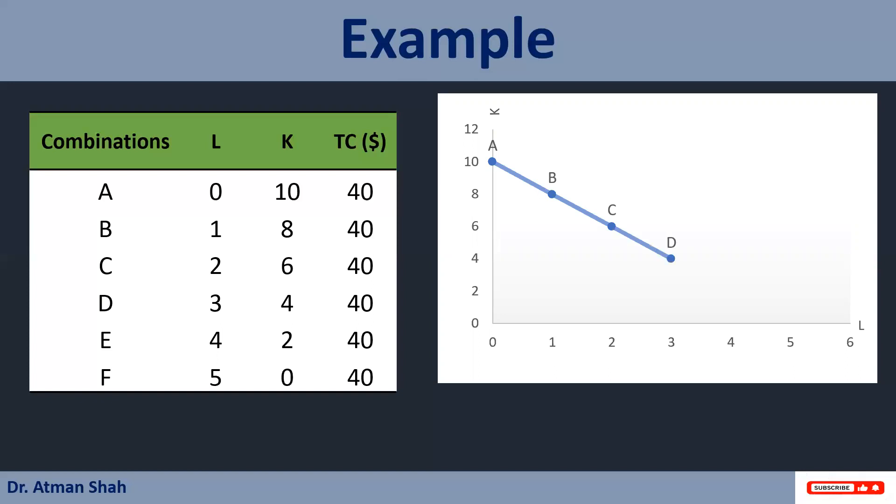Combination D, three units of labor, four units of capital. Combination E, four units of labor, two units of capital. And combination F, five units of labor and zero units of capital.